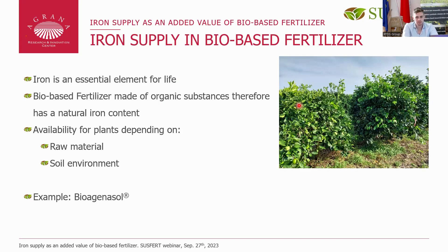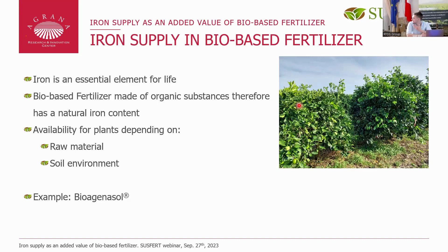The availability of iron for plants depends mostly on the raw material and the soil environment — be it the microbiome or the pH of the soil around it. As a good example of a bio-based fertilizer which has no problems inhibiting iron chlorosis, we have bio-organozol.